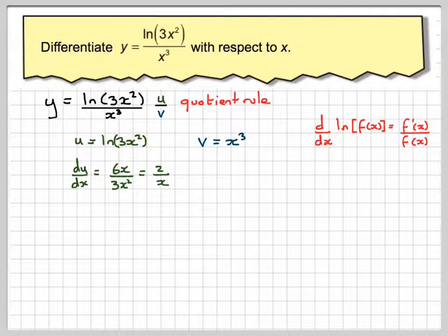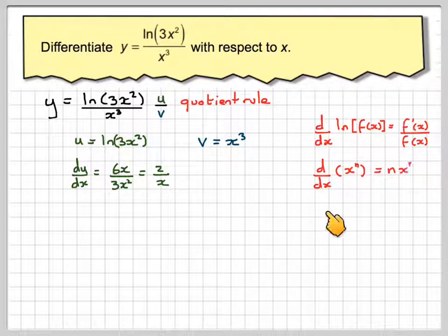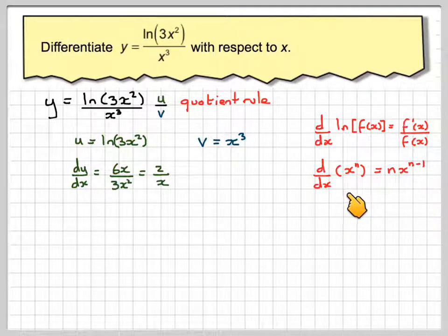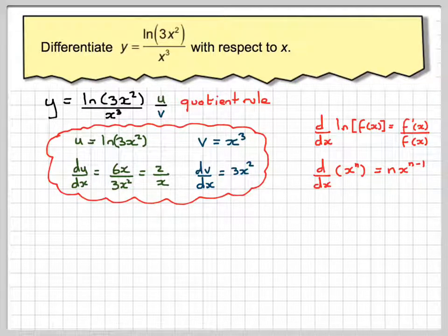v equals x cubed, and the normal rule of differentiation x to the n is nx to the n minus 1, so dv/dx is 3x squared.